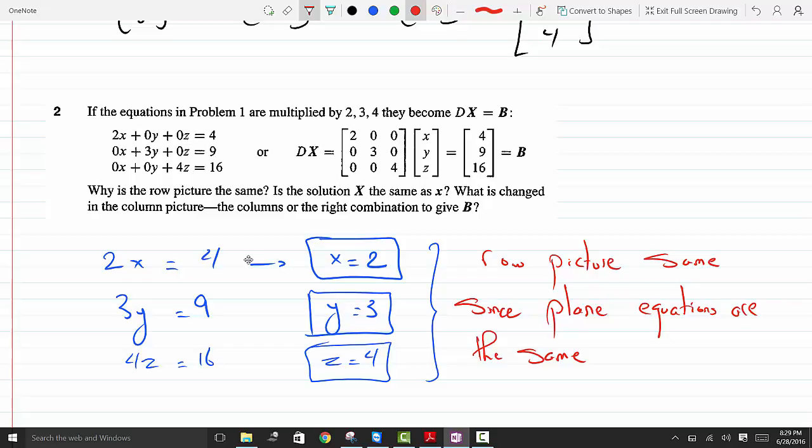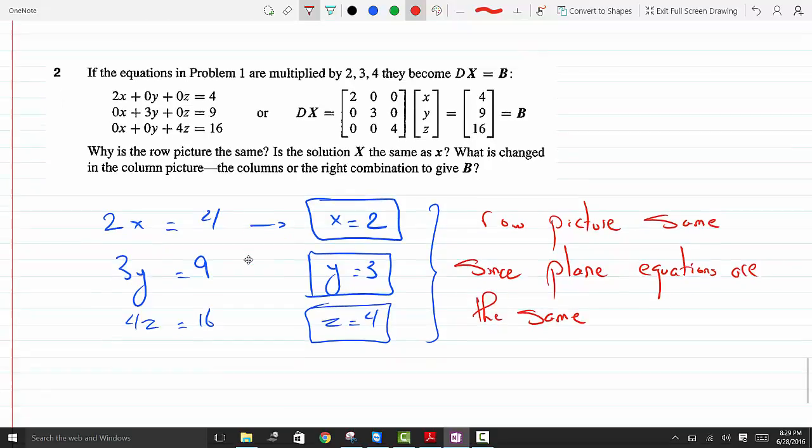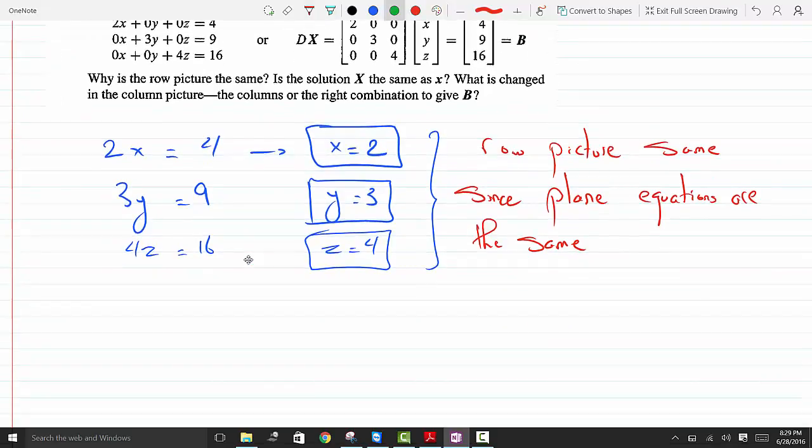And then it says what's changed in the column picture. Well, now the column picture are basically you extended the vectors to double their weight, to double their original value.